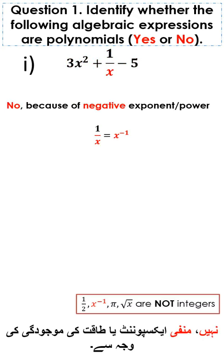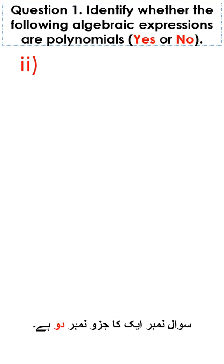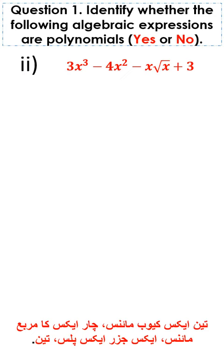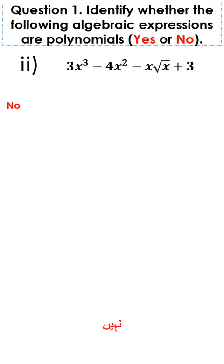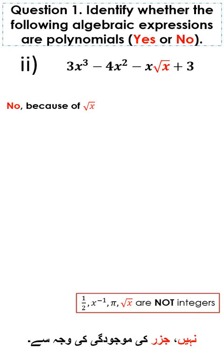Part 2 of question number 1 is 3x cube minus 4x square minus x under root x plus 3. The answer is no because of presence of under root x.